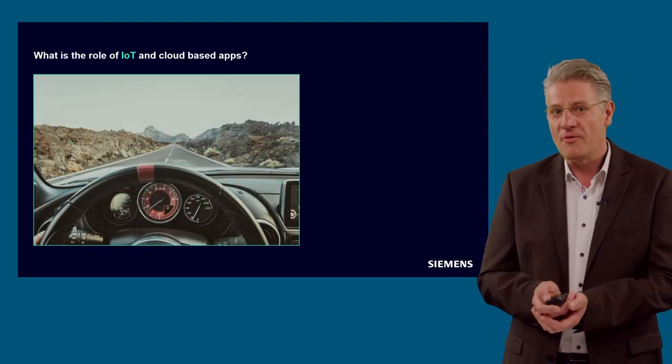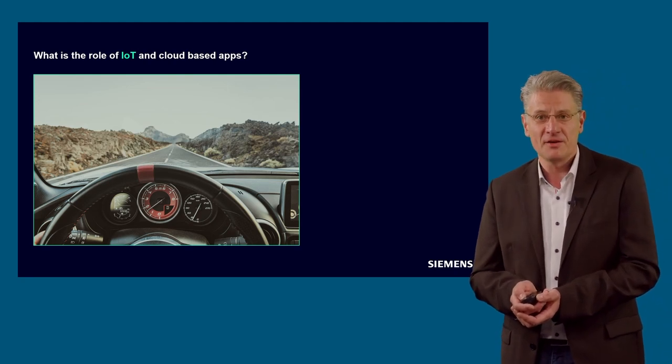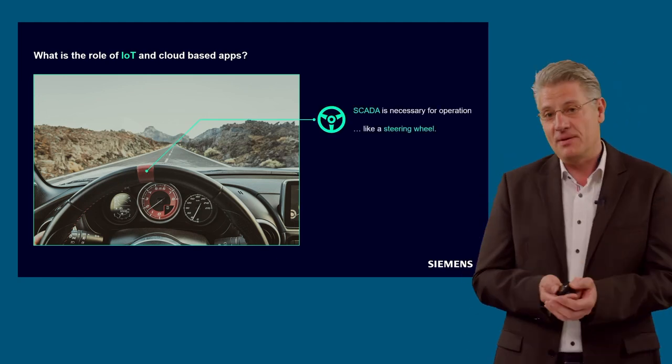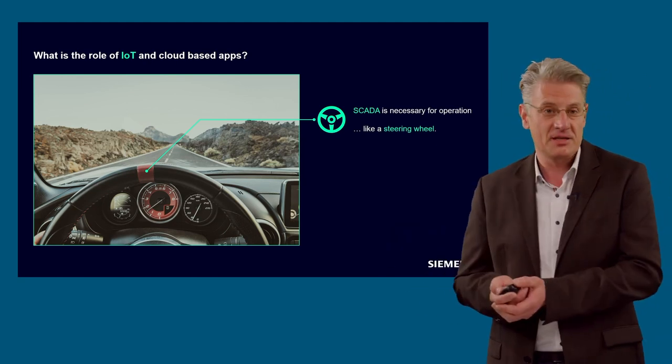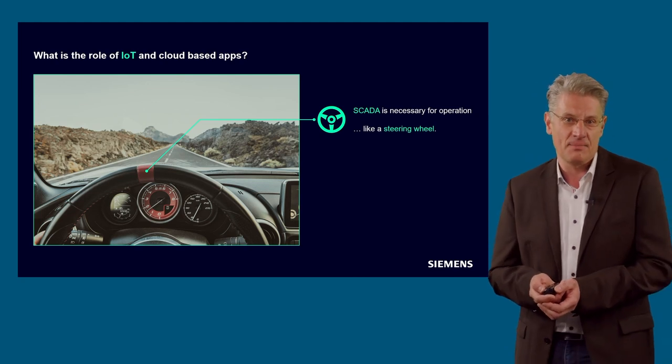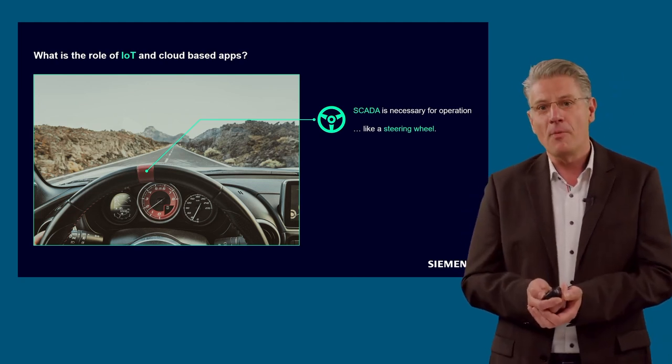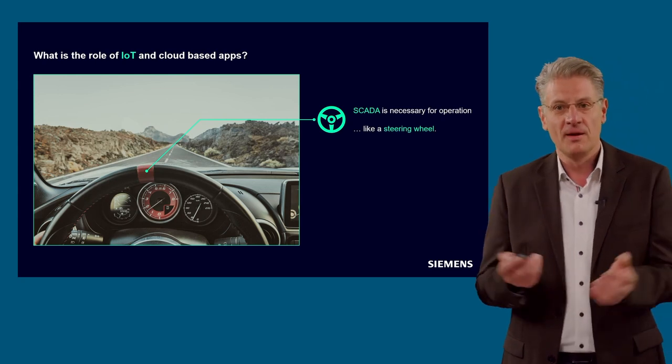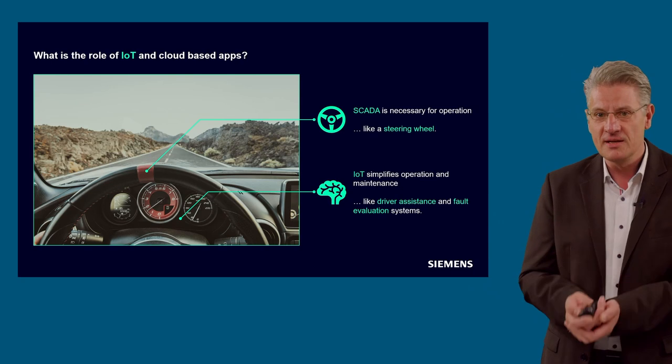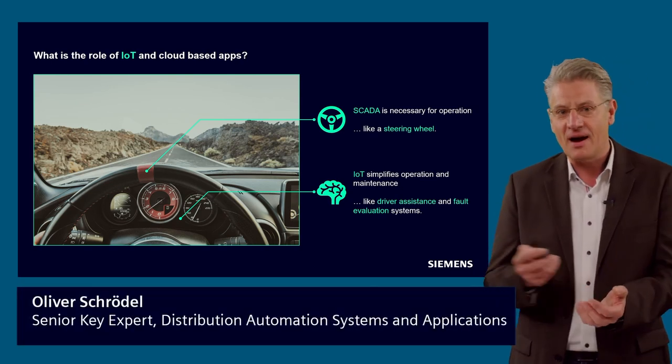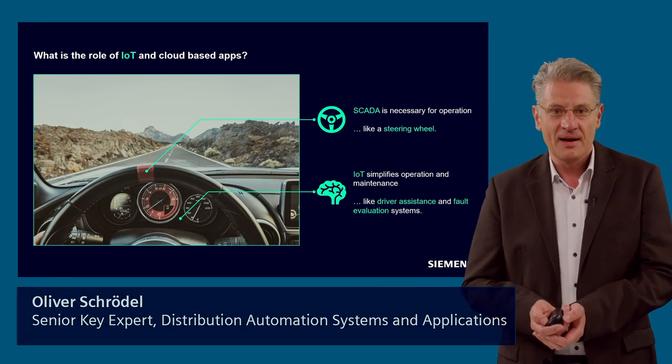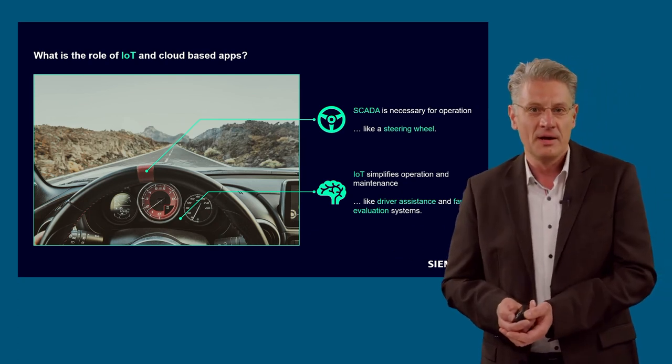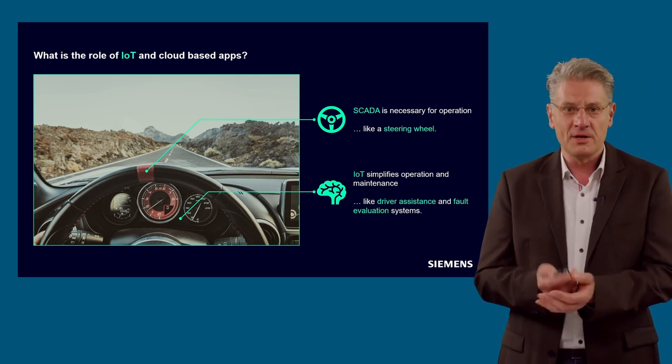What is the role of IoT in cloud-based applications? Here's a sample that brings it together. We have SCADA applications on one side and IoT applications on the other. SCADA is still necessary for operation—it's like our steering wheel where we operate everything finely. But we also have IoT for simplified operation and maintenance, which is guidance like downloadable car applications that guide you to the next parking lot. That's our driver assistance that helps you find and evaluate the system.